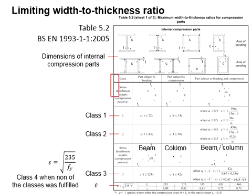The first column here represents the classes: class 1, class 2, and class 3. The limiting c per t ratios are given here.